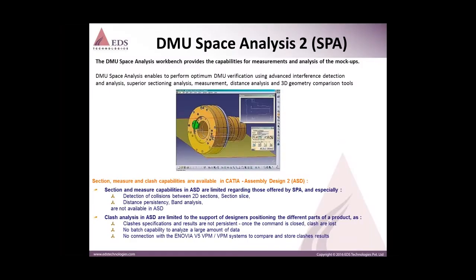DMU space analysis of mock-ups includes creation of sections and exporting geometry for different reviewing purposes. It will measure and save the data inside your application node, enabling optimum DMU verifications using advanced interface detections and analysis — superior sectioning like thickness measurement if you want. This is not available in general cases, but if you have a SPAR license, thickness measuring options are also available. Superior section analysis, measurement, distance analysis and 3D geometry comparison tools are included.